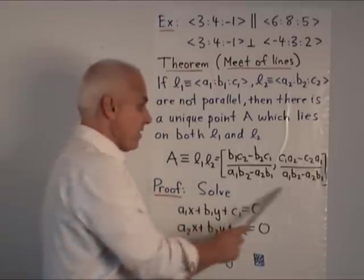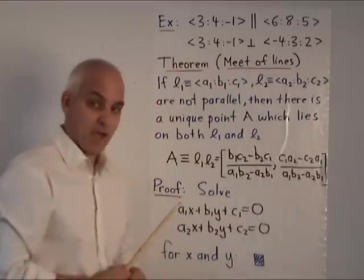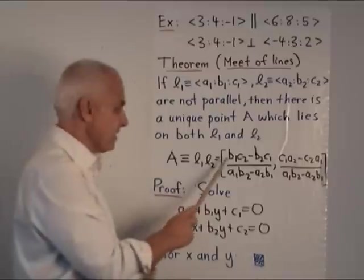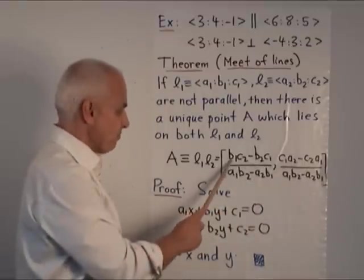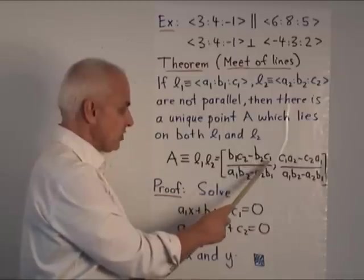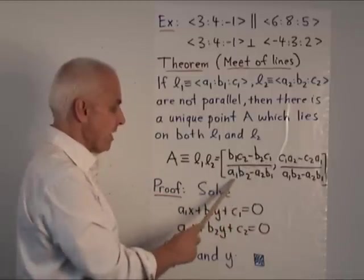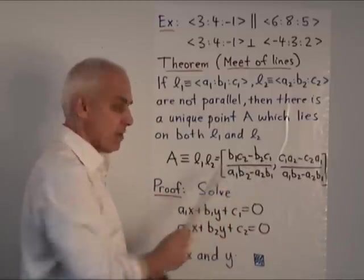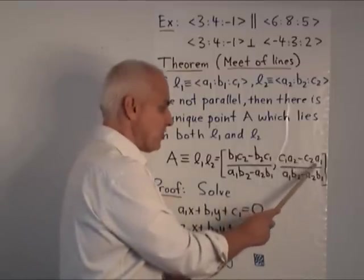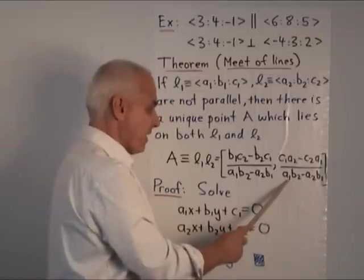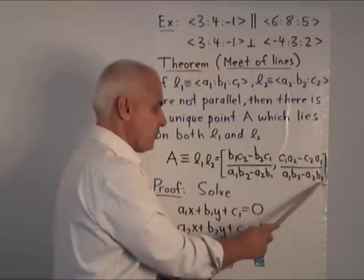This unique point A, written L1L2, is called the meet of the two lines. It's given explicitly by this rather complicated looking formula. It's a point with two coordinates. The first one is (b₁c₂ - b₂c₁)/(a₁b₂ - a₂b₁). And the second coefficient is (c₁a₂ - c₂a₁)/(a₁b₂ - a₂b₁).